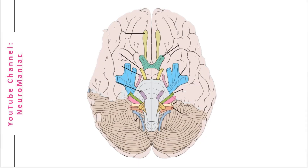For those neuroscience cookies out there, how many cranial nerves are there? You're spot on if you said 12. But to be technically correct, there are 12 pairs of cranial nerves.